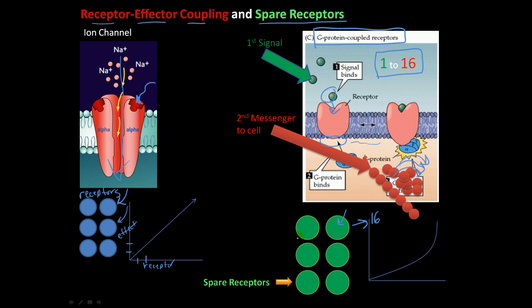And here, the spare receptors - these are spare receptors. Let's say you need 5 receptors out of 10 receptors. So 5 receptors equals max effect.